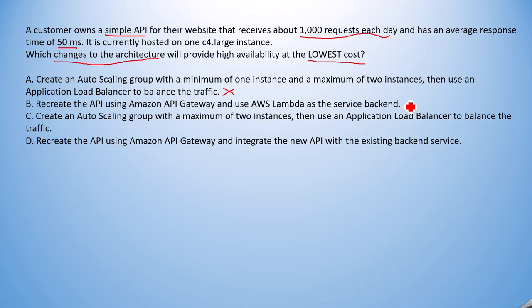Option C: Create an auto scaling group with a maximum of two instances, then use an Application Load Balancer to balance the traffic. Yes, it can handle all of your requests, but the problem is you still need to meet the 50-millisecond response time requirement. Auto scaling alone cannot reliably guarantee that, so I will mark this as a wrong answer.